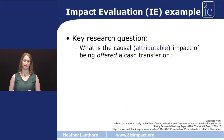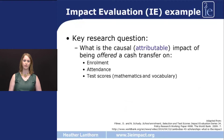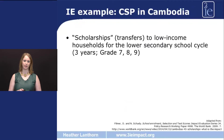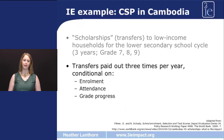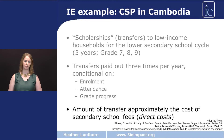Now let's look at a specific impact evaluation example where the researchers wanted to ask what is the causal or attributable impact of being offered a cash transfer on educational outcomes of interest — for example, enrollment, attendance, and test scores. In this particular case in Cambodia, scholarships, which were effectively conditional cash transfers, were offered to low-income households that had students about to start the lower secondary school cycle, covering grades 7, 8, and 9. The government structured the program to pay out the transfer three times a year, conditional on students enrolling in and attending school as well as progressing from grade to grade. The amount of the transfer covered the cost of the school fees, but nothing else — just the direct costs.